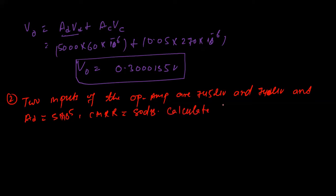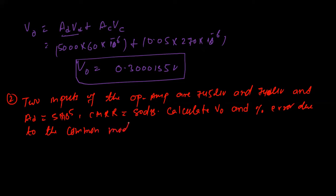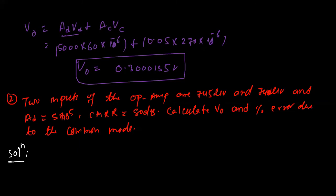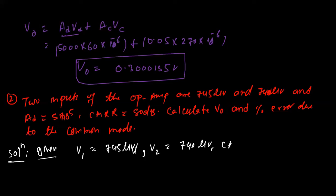In the solution: V1 = 745 µV, V2 = 740 µV. First find V_d = V1 − V2 = 745 − 740 = 5 microvolts. Then V_c = (745 + 740) / 2 = 742.5 microvolts. A_d = 5 × 10^5. CMRR is given as 80 dB.